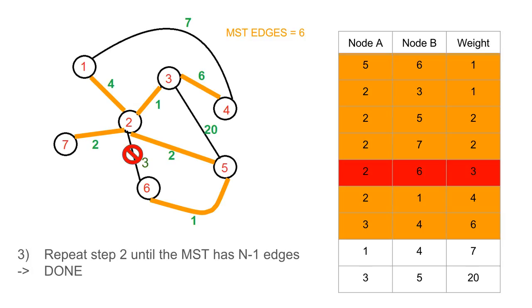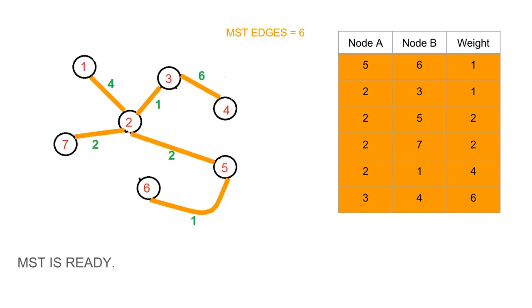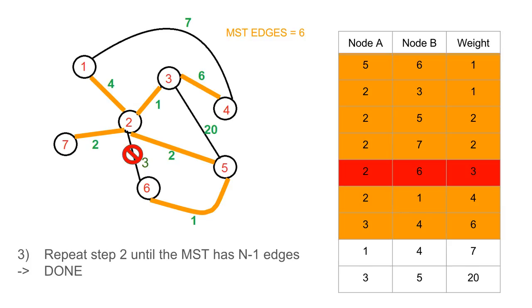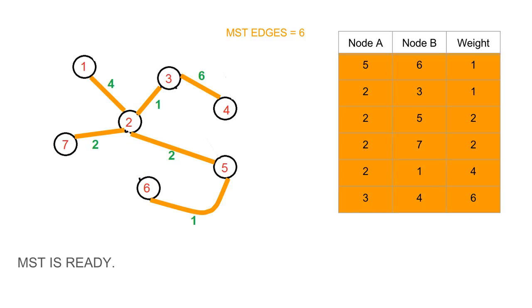We erase all the other edges. As you can see, the edges we're not gonna use are erased, and we are left with our minimum spanning tree.